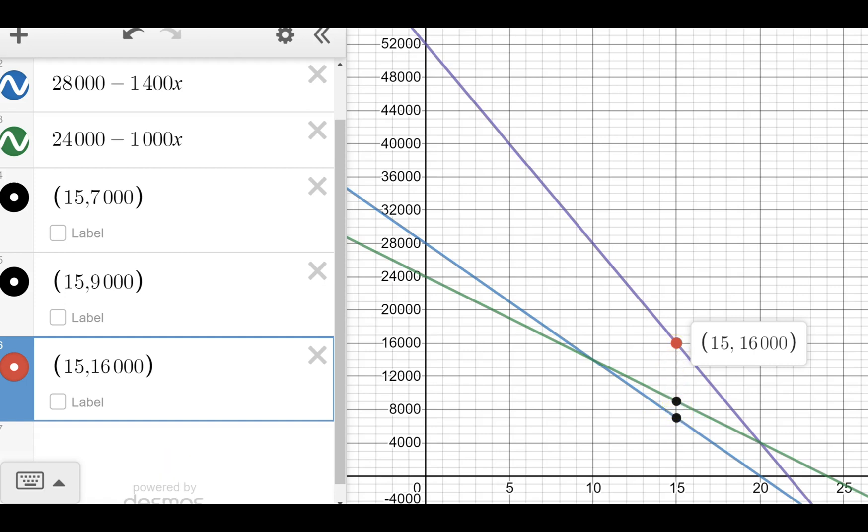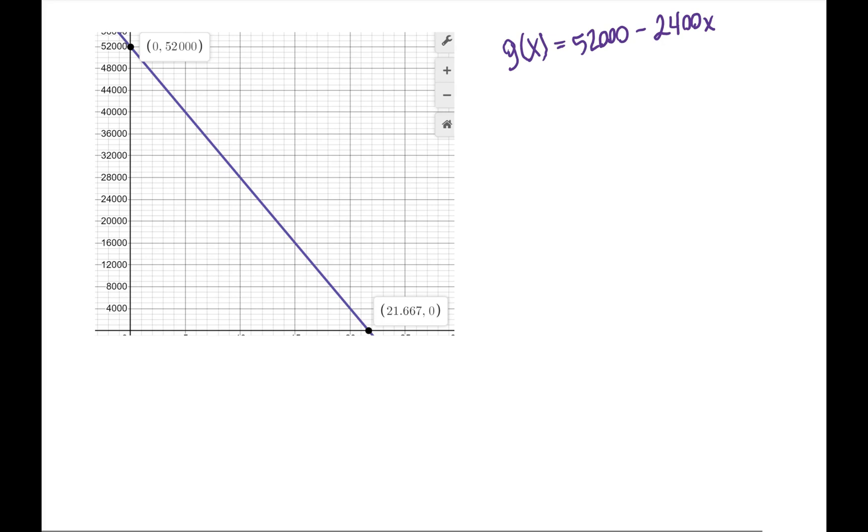To find any point on the new graph, we're just adding the y-values from the two previous graphs and maintaining the same x-value location. Now that we've got a graph for G(x), we can interpret some of the key features. The domain is going from 0 to 21.6 repeating, or if we want to be super exact, that's 65 thirds, which rounded is 21.667.